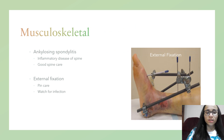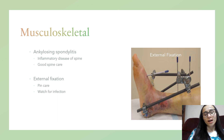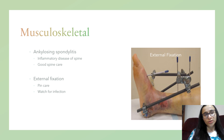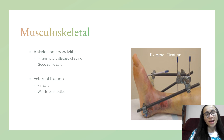Ankylosing spondylitis is inflammation of the spine that over time can cause small spinal bones to fuse. There is no cause or cure — management is symptomatic: proper posture, daily stretching, no smoking, and NSAIDs. External fixation uses metal pins or screws inserted through the skin into the bone, attached to metal rods outside the body, to immobilize a fracture. Check the pin site for signs of infection, perform neurovascular assessments, and notify the doctor if pins are loose — nurses do not tighten them.